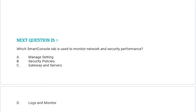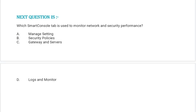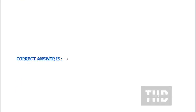Next question: Which SmartConsole tab is used to monitor network and security performance? Option A: Manage & Settings. Option B: Security Policies. Option C: Gateways and Servers. Option D: Logs and Monitor. Correct answer is Option D.